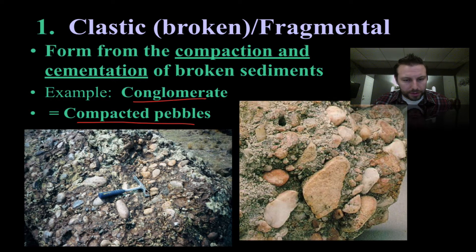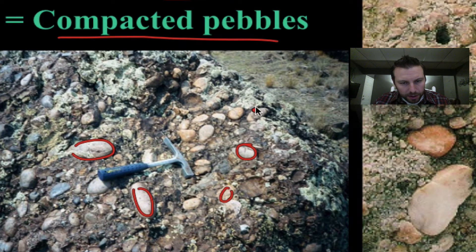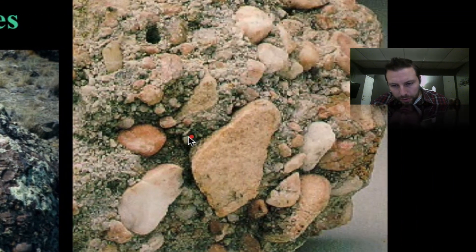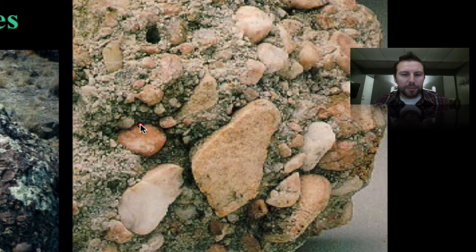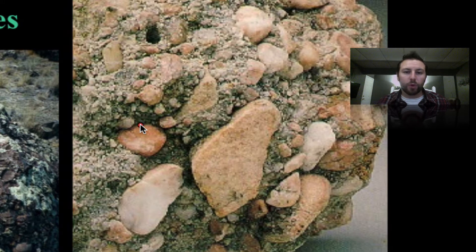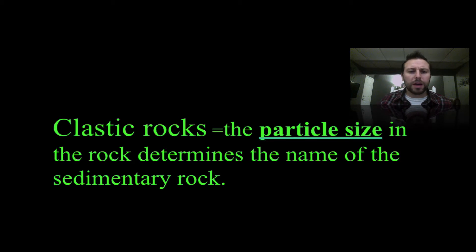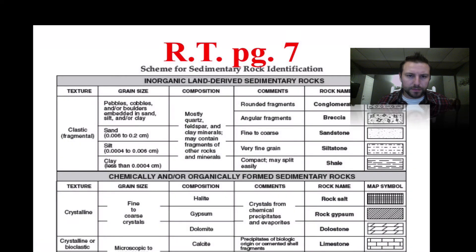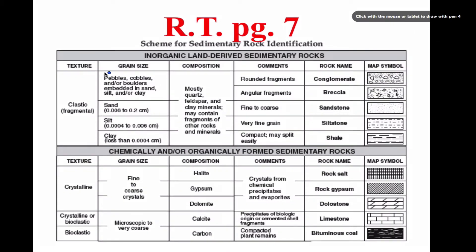We can see with this rock hammer all these nice pebbles — some cobble-sized pieces — all compacted together. If we look more closely, we can see sand grains in there too. Under pressure, these materials are deposited horizontally and water is forced out over time, helping to form conglomerate. Remember, with clastic rocks, the particle size determines the name of the sedimentary rock.